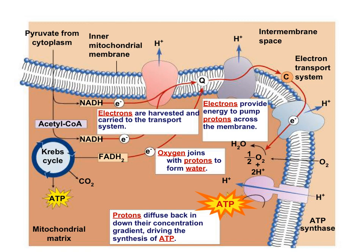Here's a recap of the whole process. Pyruvate and NADH from glycolysis are brought into the mitochondrial matrix. The NADH goes right to the electron transport chain, but the pyruvate goes to the link reactions and the Krebs cycle. NADH and FADH2 drop off electrons at the electron transport chain, which passes the electrons down a system of transporters, releasing small amounts of energy with each transfer. The energy released is used to pump protons from the mitochondrial matrix to the intermembrane space. Finally, that built-up proton gradient moves through ATP synthase, and the energy from the protons is used to join ADP and phosphate to make ATP.